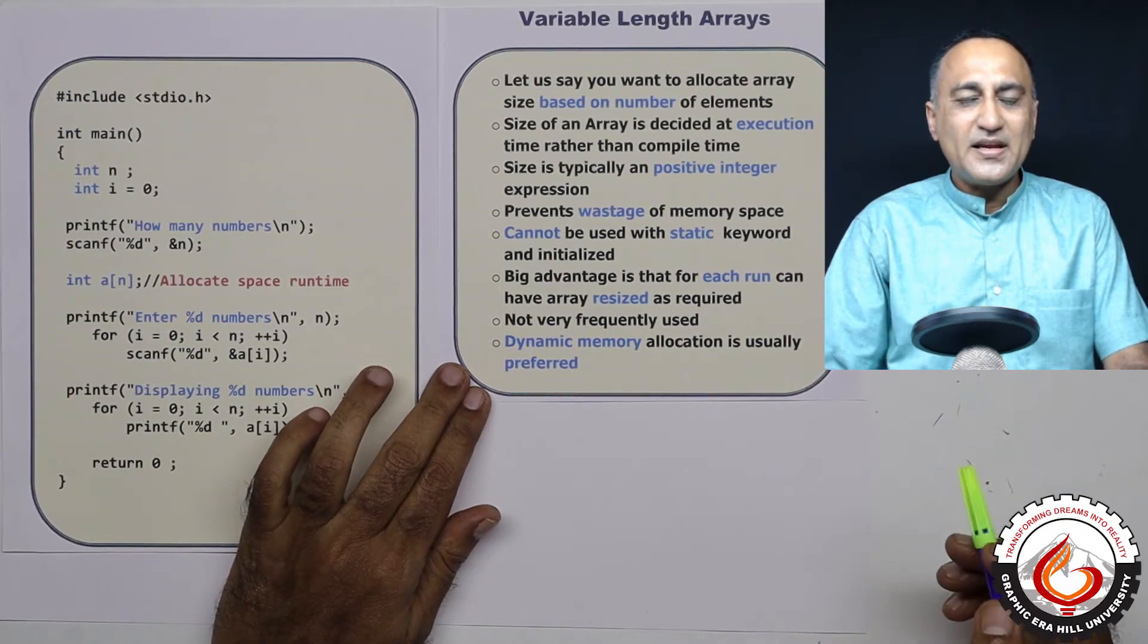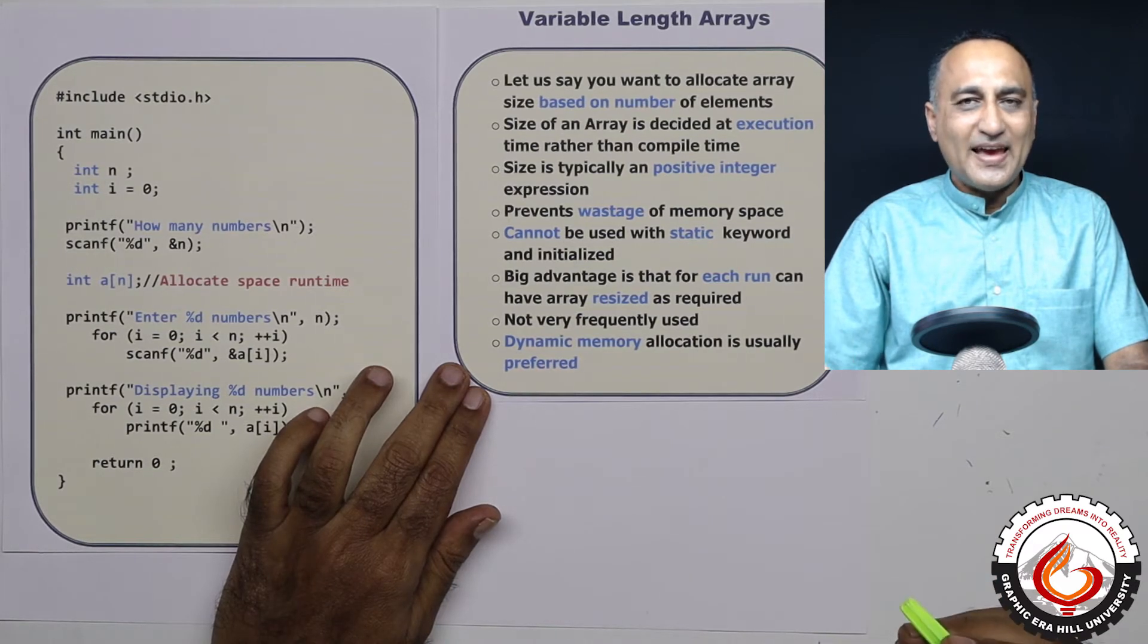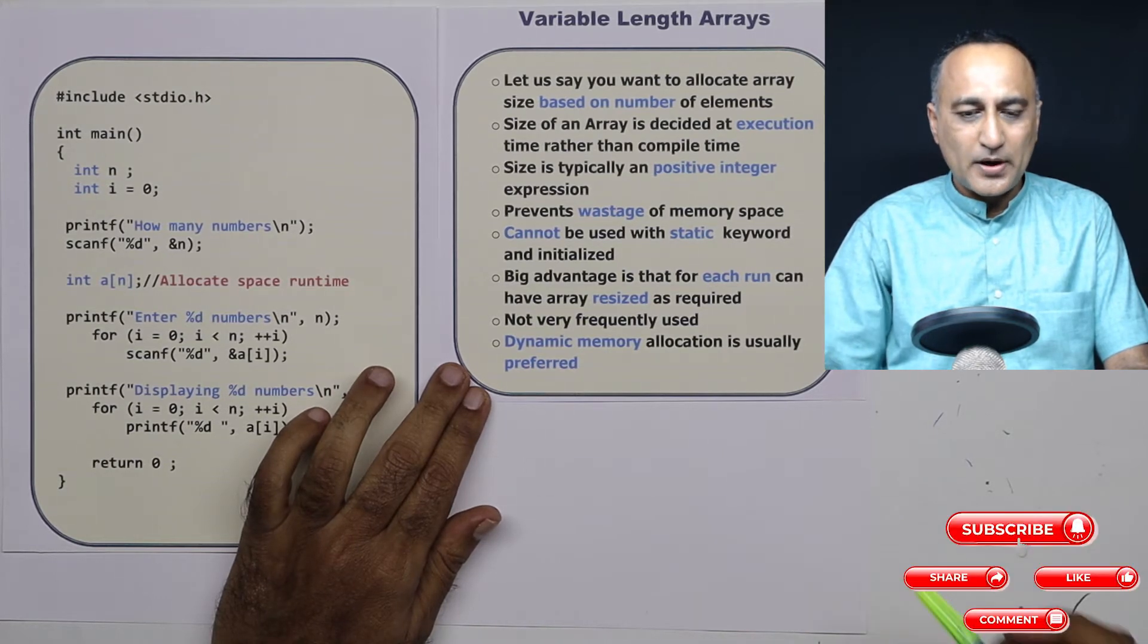So rather than allocating an array of maximum size of say 10,000, you can allocate or create an array of just the required size based on the need at that particular runtime or program.